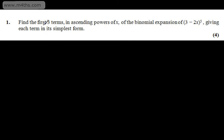This is question number 1. For four marks, we're asked to find the first three terms in ascending powers of x of the binomial expansion of (3 - 2x) to the 5th, giving each term in its simplest form.